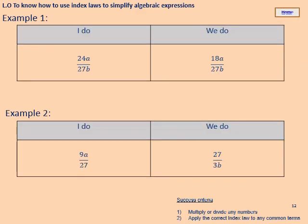Now we're going to move on to using the index laws to simplify algebraic expressions when we have to divide two terms. Have a look at this first one: 24a over 27b.